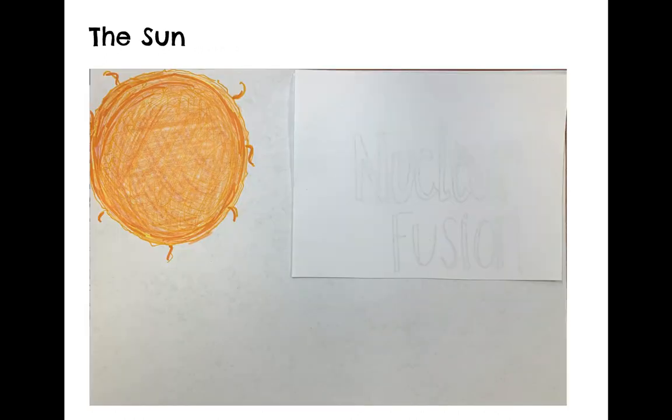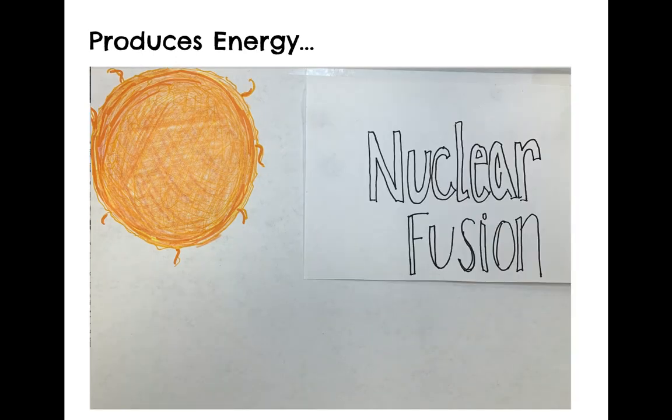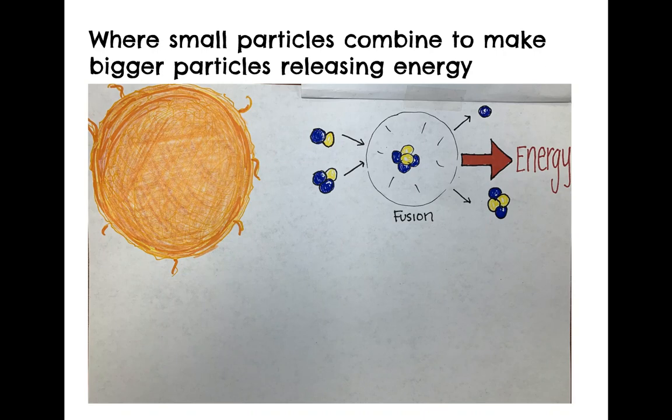So let's begin this discussion of radiation by thinking about the sun. The sun produces energy through a process known as nuclear fusion. Nuclear fusion is where really small particles that are inside the sun combine to produce bigger particles. And in this process, a lot of energy is released.